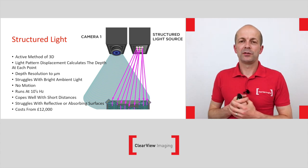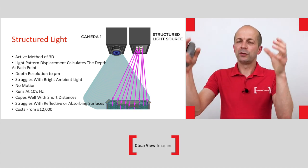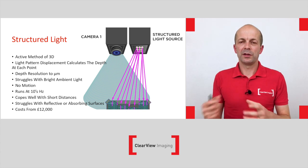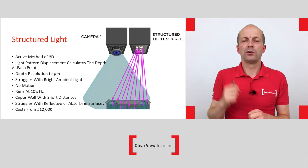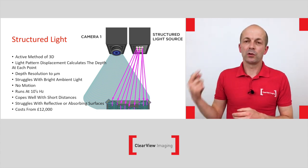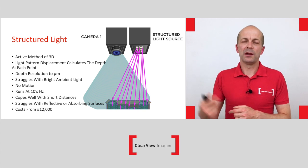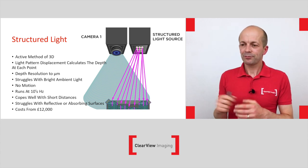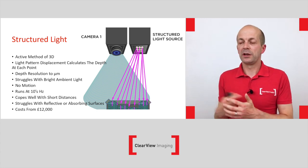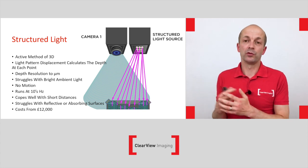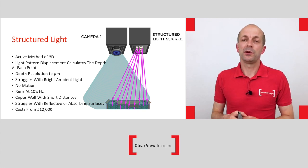Structured light is typically used in bin picking applications — you'd have it over a bin of parts, project the structured light source onto the area, the camera acquires information, passes it to the system, and the robot knows exactly where to go. It can run quickly, acquiring images very fast — not something that takes minutes. It's probably better suited to short distances because you're working with a light source, and similarly it can struggle with highly reflective or absorbing surfaces. In terms of cost, it tends to be one of the higher-cost technologies.